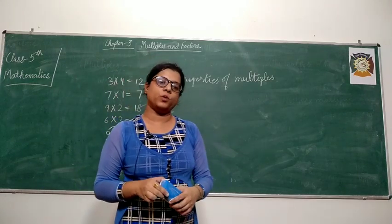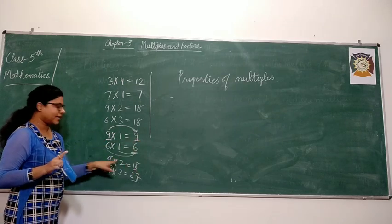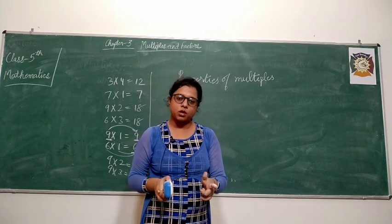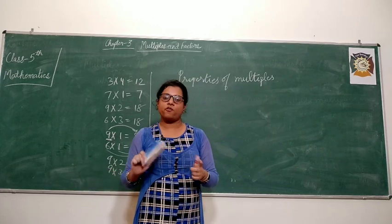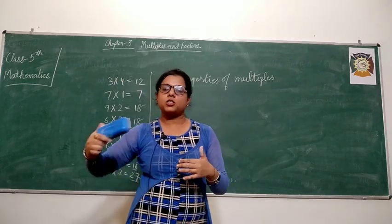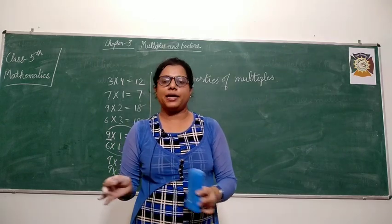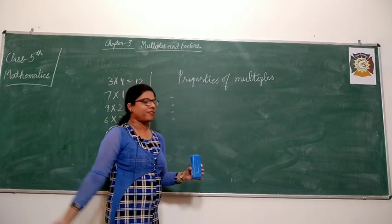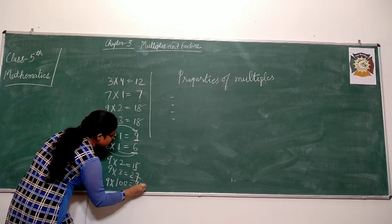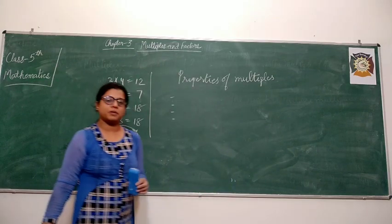Next: every multiple of a number is equal to or greater than the number. The first multiple is equal to the number itself, the second multiple is greater, the third multiple is even greater. For example, 3 into 1 is 3 — the first multiple is equal to the number; 3 into 2 is 6; 3 into 3 is 9. So all consecutive multiples are greater than the number. Next property: multiples are endless. You can take endless multiples of any number, because you can multiply 9 by any number — by 100, by 1000, and so on. So the multiples of a number are endless; there is no end to the number of multiples that can be obtained.